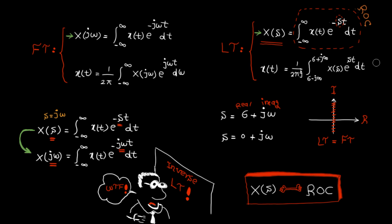I made a small mistake — the integral variable in inverse Laplace transform is s, not t. It doesn't matter anyway, as I'm not going to use that equation. Now I want to solve some examples to practice Laplace transform and make the concept behind the region of convergence crystal clear.